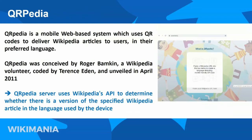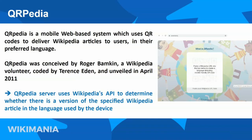Today we are going to talk about QRpedia and the new solution. QRpedia was a project for a mobile web-based system that used QR codes to deliver Wikipedia articles to users in their preferred language. QRpedia was conceived by Roger Bumpkin, a Wikipedia volunteer from the UK, coded by Terence Sweden, and invented in April 2011. The QRpedia server uses the Wikipedia API to determine whether there is a version of the specified Wikipedia article in the language used by the device — you scan the QR code and based on the device language, QRpedia opens the Wikipedia page in that language.